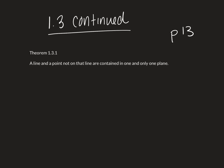This theorem says a line and a point not on that line are contained in one and only one plane. So, if we have a line, it's got two points, let's call them A and B, and you have a point that's not on that line, so a non-collinear point, C.